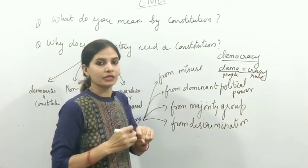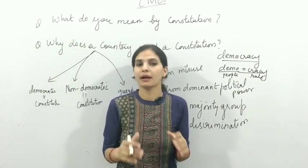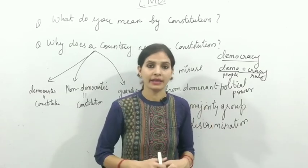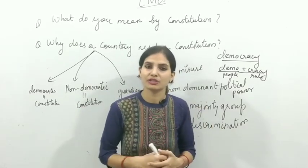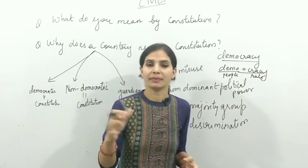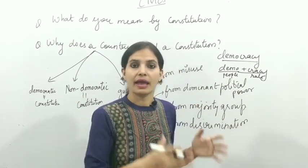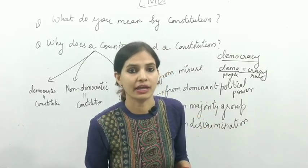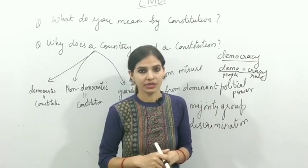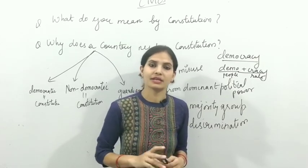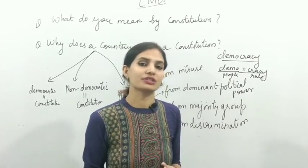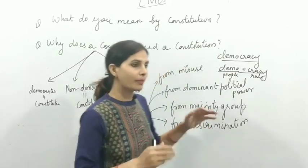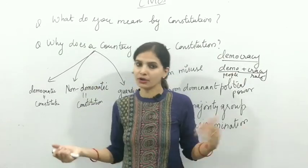In a democracy, we elect representatives and send them to rule on our behalf — whether they are chief ministers, ministers, MPs, or MLAs. We have all our elected representatives who run the government. So when we have such a government where rulers and ministers are elected to run things, we call it democracy. Our country has two types: democracy and non-democracy.